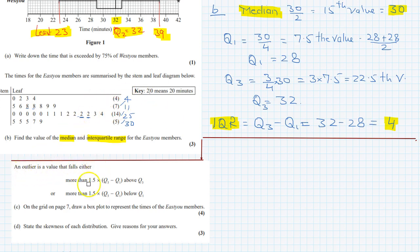An outlier is a value that falls either more than 1.5 times Q3 minus Q1 above Q3, or more than 1.5 times Q3 minus Q1 below Q1. On the grid on page 7, draw a box plot to represent the times of the STU members. For this box plot we need minimum, maximum, Q1, Q2, and Q3.